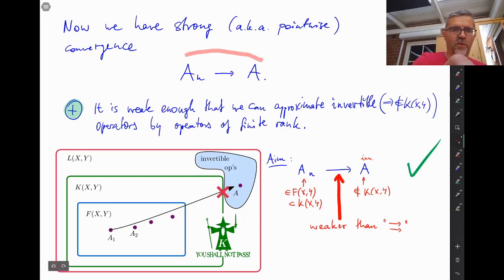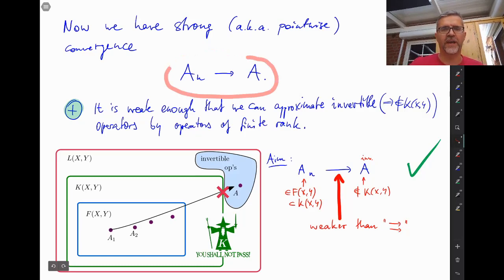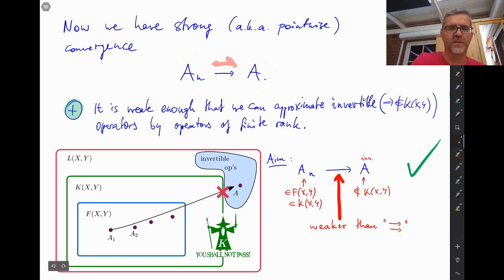On the downside, of course, the connection between the operator A and its approximants A_N is not as strong anymore as it used to be when this was uniform convergence. And hence, we might not be able to prove the same theorem that we proved last week for applicability and stability of this sequence versus invertibility of A.